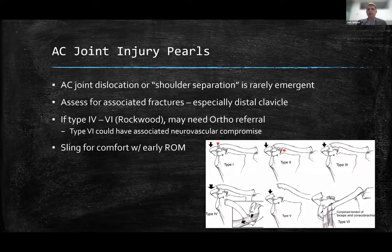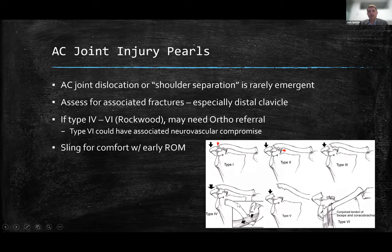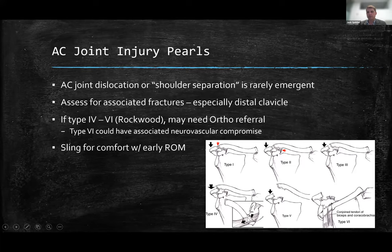I'm going to briefly hit on AC joint injuries — this could be a whole other talk. It's rarely emergent. You want to look for associated fractures, so it's helpful to get x-rays. If you have a type four through type six injury, these may need surgery. I've seen type one through five. The type six theoretically could have some neurovascular compromise with where that clavicle is positioned — so that could be an urgent or emergent referral. These can really be treated with a sling and potentially ortho follow-up for higher grade injuries.